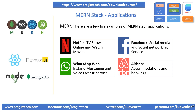Airbnb's web application is a famous example of a MERN stack implementation. It allows users to search for accommodations, make bookings, and manage their listings. While the exact technologies used by Airbnb may vary, they have publicly shared some of their technology stack, including React for the front-end and NodeJS for the back-end.